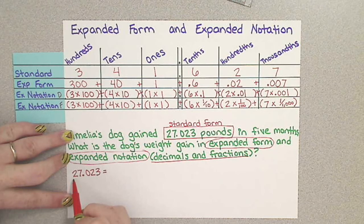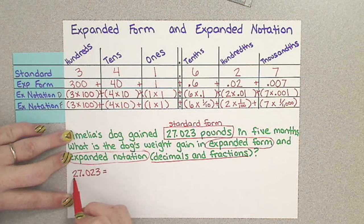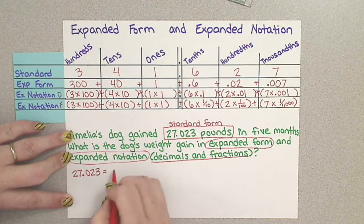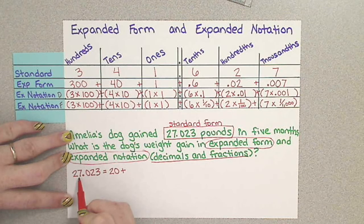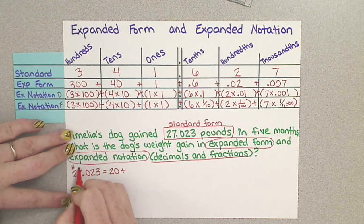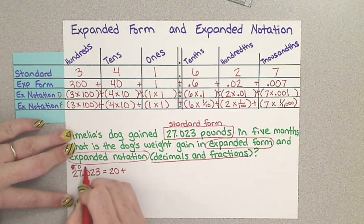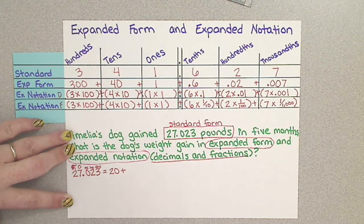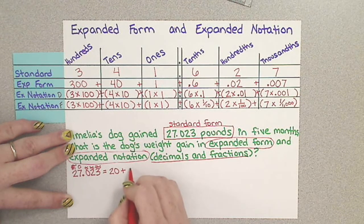So I have 27 and 23 thousandths pounds. I'm going to start with my largest place value. The value of this 2 is 2 times, it's in the tens place, so 2 times 10 and 2 times 10 is 20, plus 7 times 1 because it's in the ones place. We can even label this: tens, ones, tenths, hundredths, thousandths. So 2 times 10 is 20, 7 times 1 is 7.